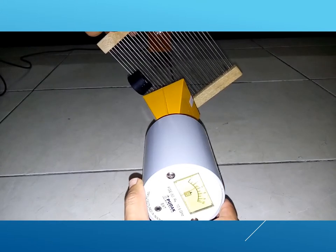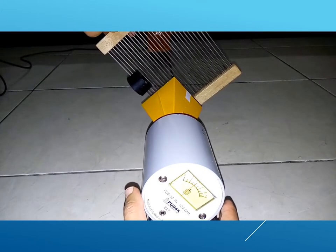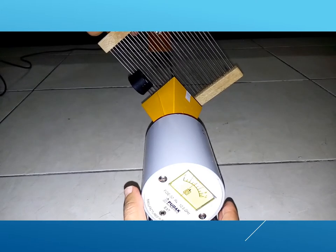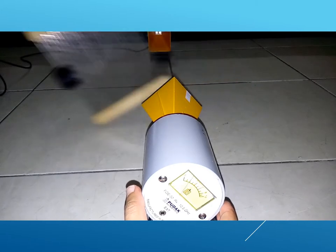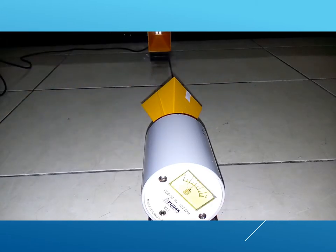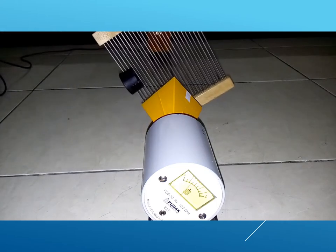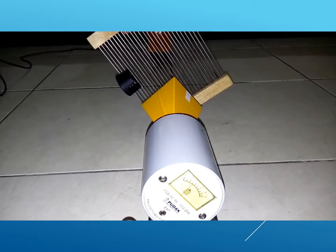While keeping the grating at 45 degrees, let's rotate the receiver. It seems that the receiver always reads highest intensity when it is perpendicular to the grating, and reads zero when they are parallel to each other.